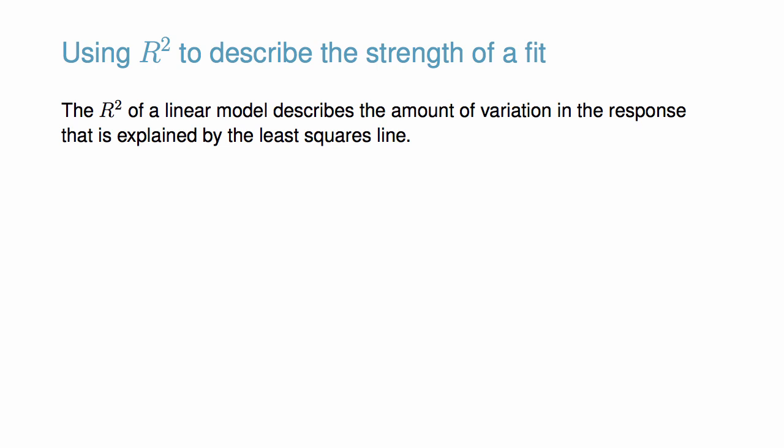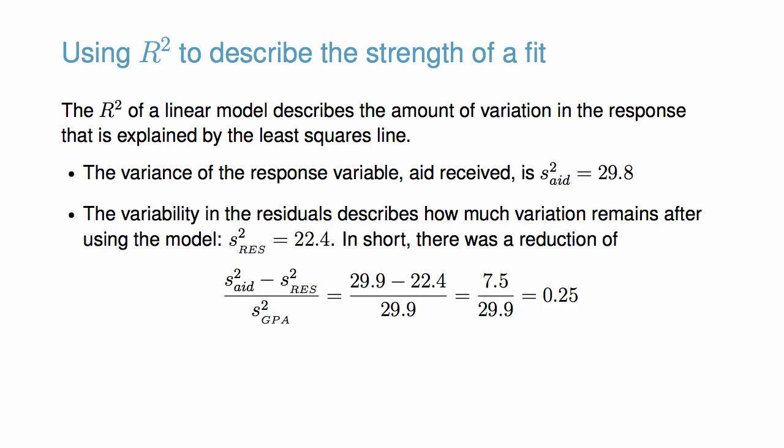The R² of a linear model describes the amount of variation in the response that is explained by the least squares line. The variance of the response variable, aid received, is 29.8. However, if we apply our least squares line, we can reduce our uncertainty in predicting aid by using information about the student's family income. The variability in the residuals describes how much variation remains after using the model, which in our case is 22.4.